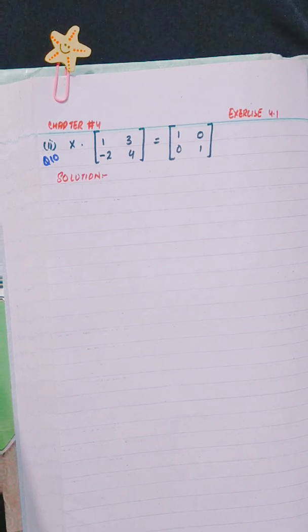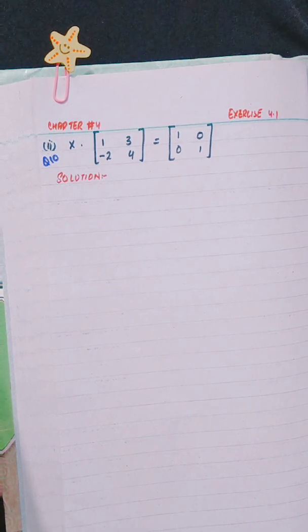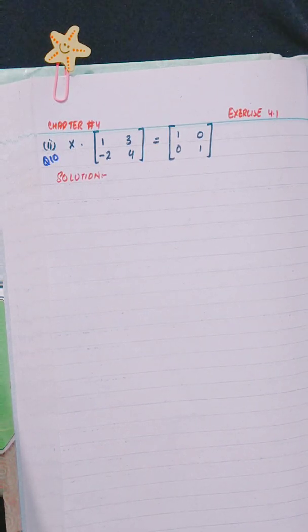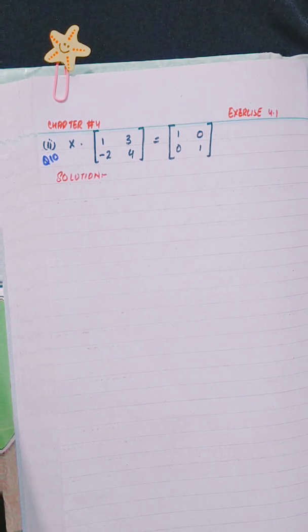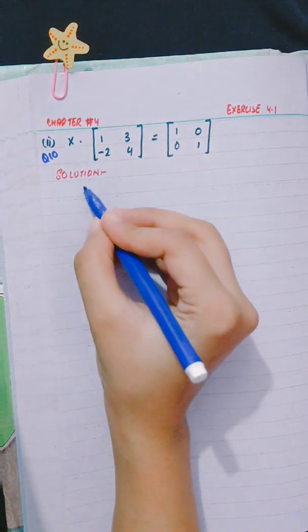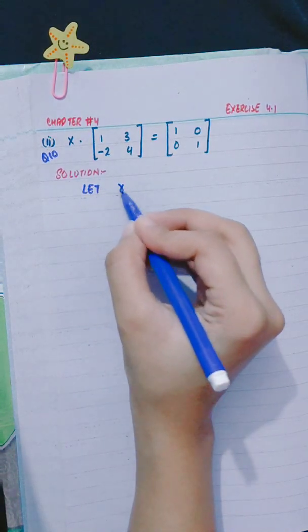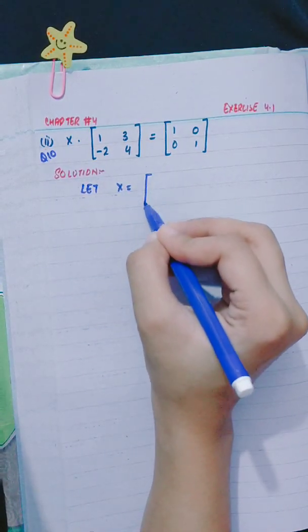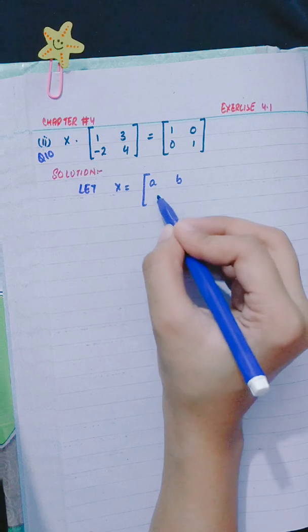Hello everyone, this is Rabia Aslam. In this video, we will solve question number 10, part 2, from exercise 4.1, chapter number 4. Wherever possible, find a matrix X. Part 2 is X into [1, 3; -2, 4] equals [1, 0; 0, 1]. Let X equal a matrix, suppose [a, b; c, d].